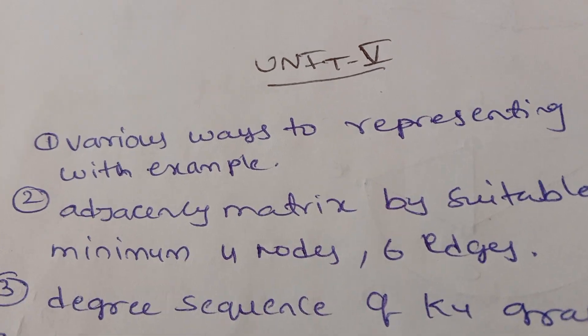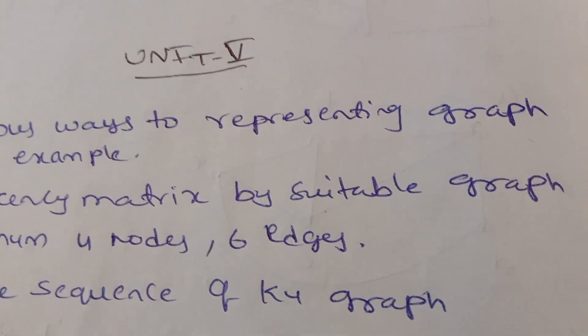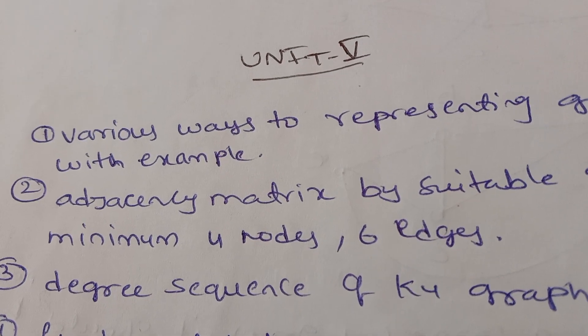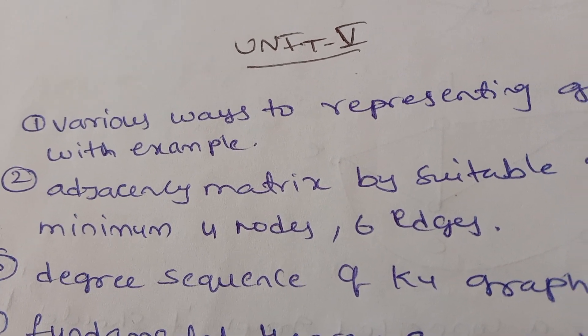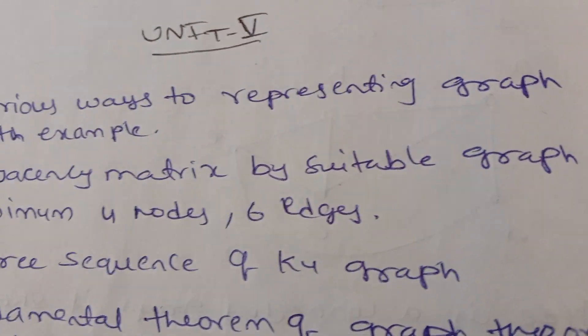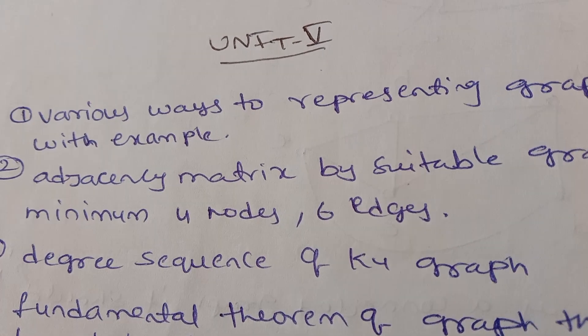Okay, first question: Various ways to represent graph with example. This is a very important question. Next, second question: Adjacency matrix by suitable graph with minimum 4 nodes and 6 edges. This is a question.